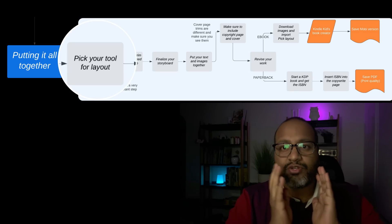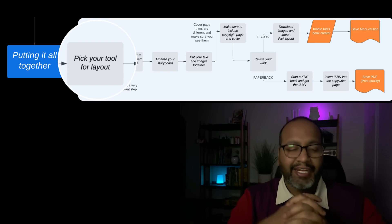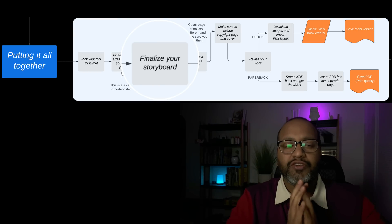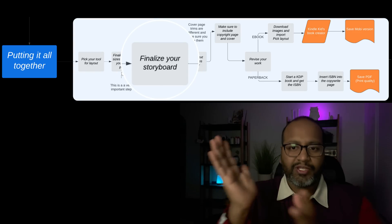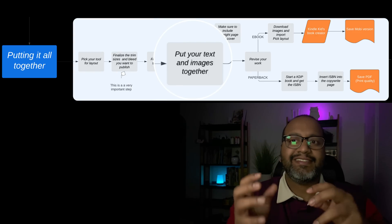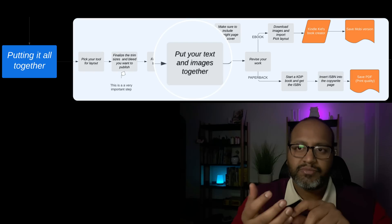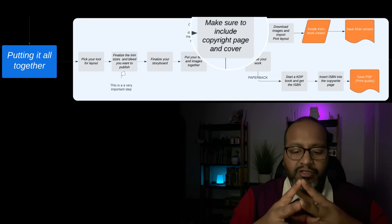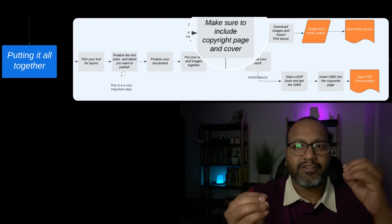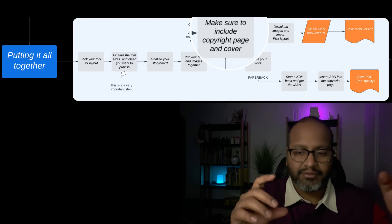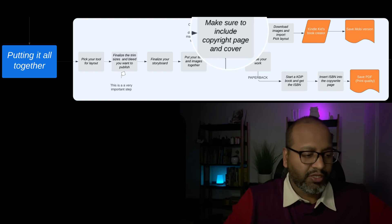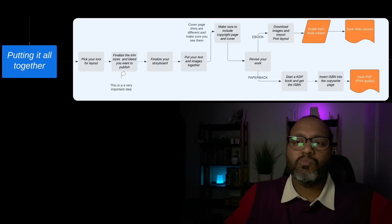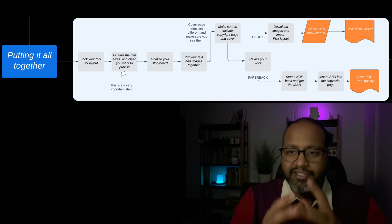Once you pick your tool for your layout, you finalize the trim sizes and bleed settings for what you want to publish, finalize your storyboard, and put your images and text together. Finally, after putting your text and images together, you want to fill out important things like the copyright page, cover page, and back page of the book where you give some details about it.